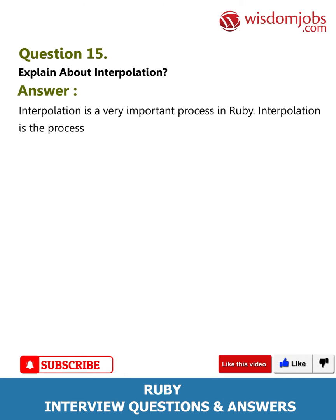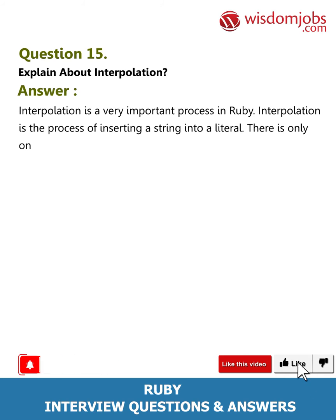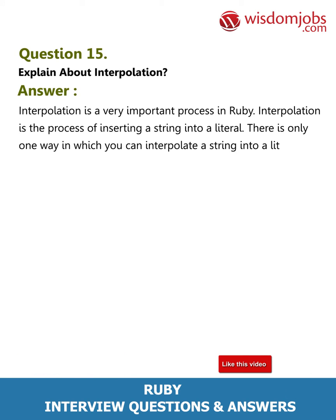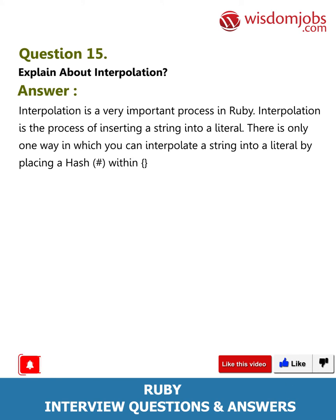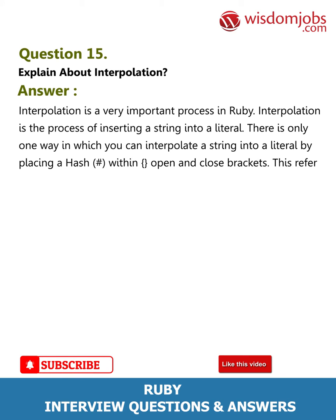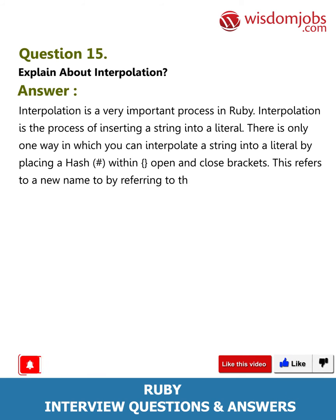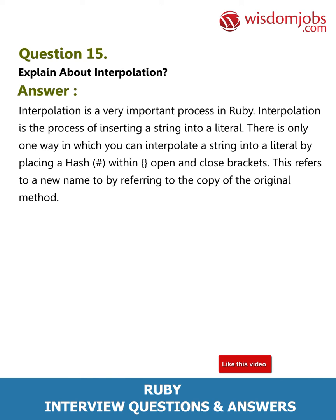Question 15: Explain about interpolation. Answer: Interpolation is a very important process in Ruby. Interpolation is the process of inserting a string into a literal. There is only one way in which you can interpolate a string into a literal: by placing a hash within open and close brackets. This refers to a new name by referring to the copy of the original method.